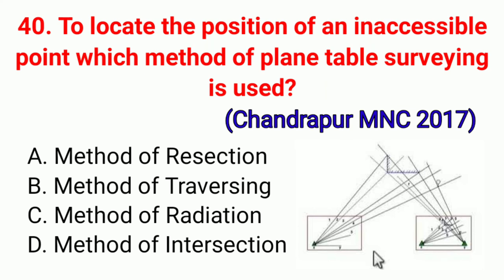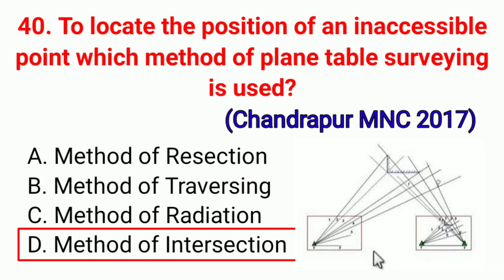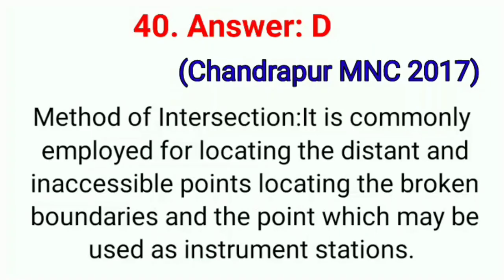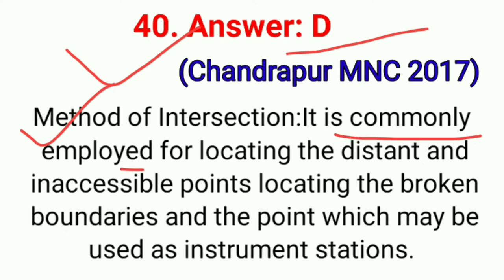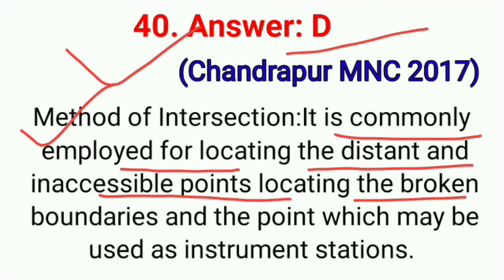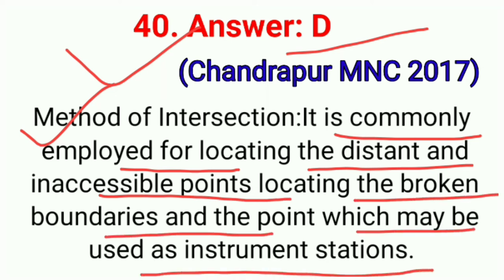Question No. 40. To locate the position of inaccessible points, which method of plane table surveying is used? Correct option D: Method of intersection. It is commonly employed for locating distant and inaccessible points, locating broken boundaries and points which may be used as instrument stations. Correct option D.